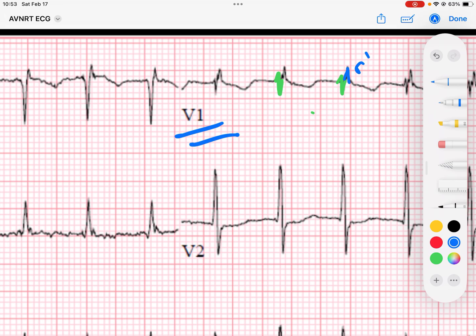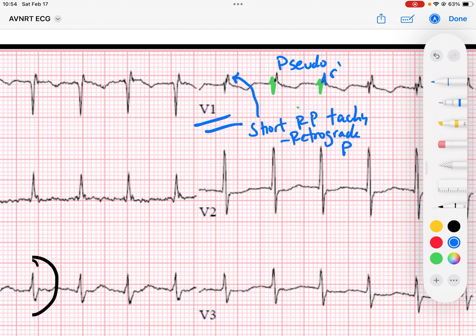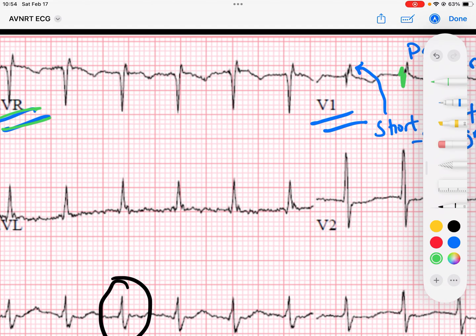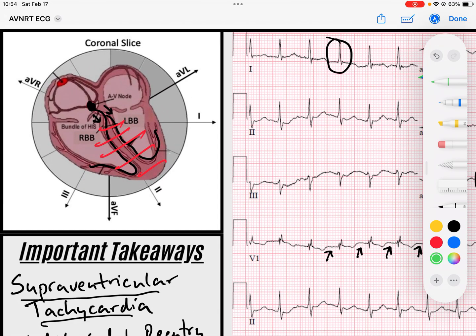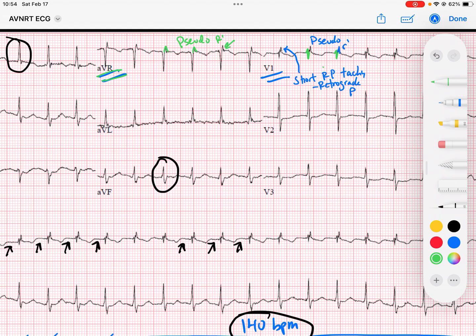And that R prime, we're like, well, is this an incomplete right bundle branch block? Well, in the setting of a narrow complex tachycardia with no P waves, we call this a pseudo R prime. What is that R prime? That's actually representing, this R prime is actually representing the short RP tachycardia, right? That is the retrograde P wave. And you can see that even better in AVR, where we have that pseudo R prime, right? That R prime is heading towards AVR at the end of the QRS. Well, if we had retrograde depolarization from this AVNRT going in this direction via the atria, we would have a retrograde P wave that would be upright in AVR. And that's exactly what we're seeing here. So that's our pseudo R prime.